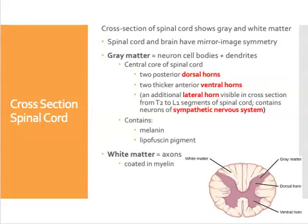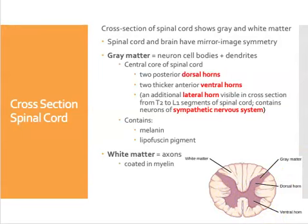Throughout all of the spinal cord, you will find dorsal horns and ventral horns. The reason that the gray matter is a darker color than the white matter is because of pigment. This area is richer in melanin pigment and also in a pigment unique to nervous tissue called lipofusion. Lipofusion is produced and present in the cell bodies of neurons, which is why the cell bodies look that darker gray color.